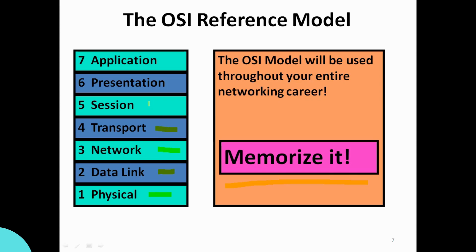The OSI model has seven layers: the Physical layer, Data Link layer, Network layer, Transport layer, Session layer, Presentation layer, and Application layer.